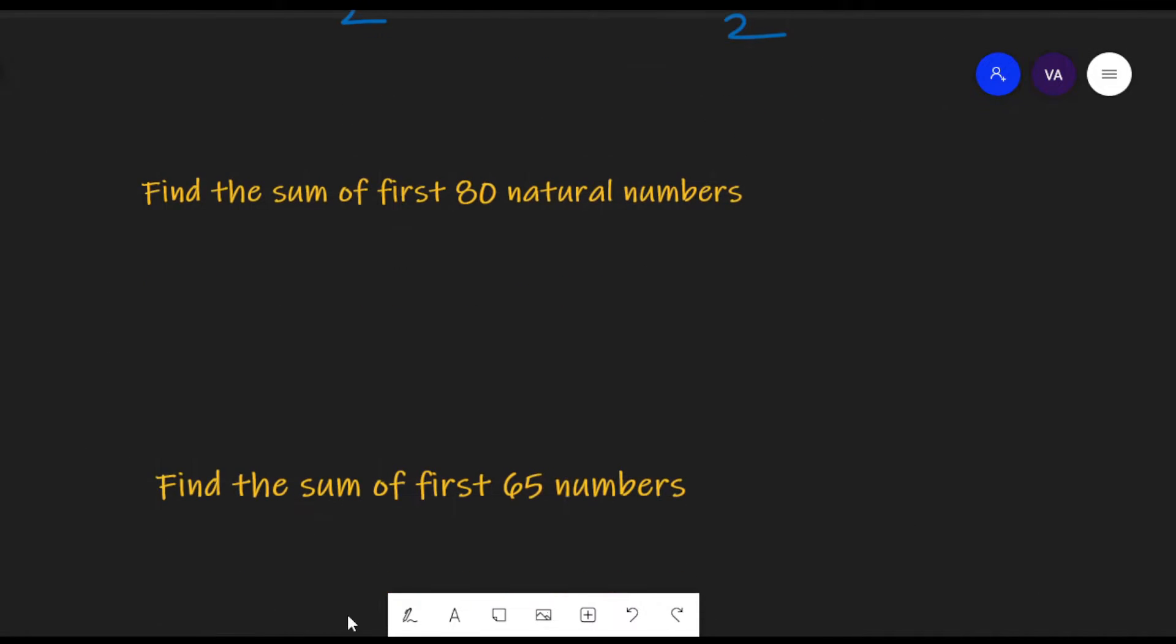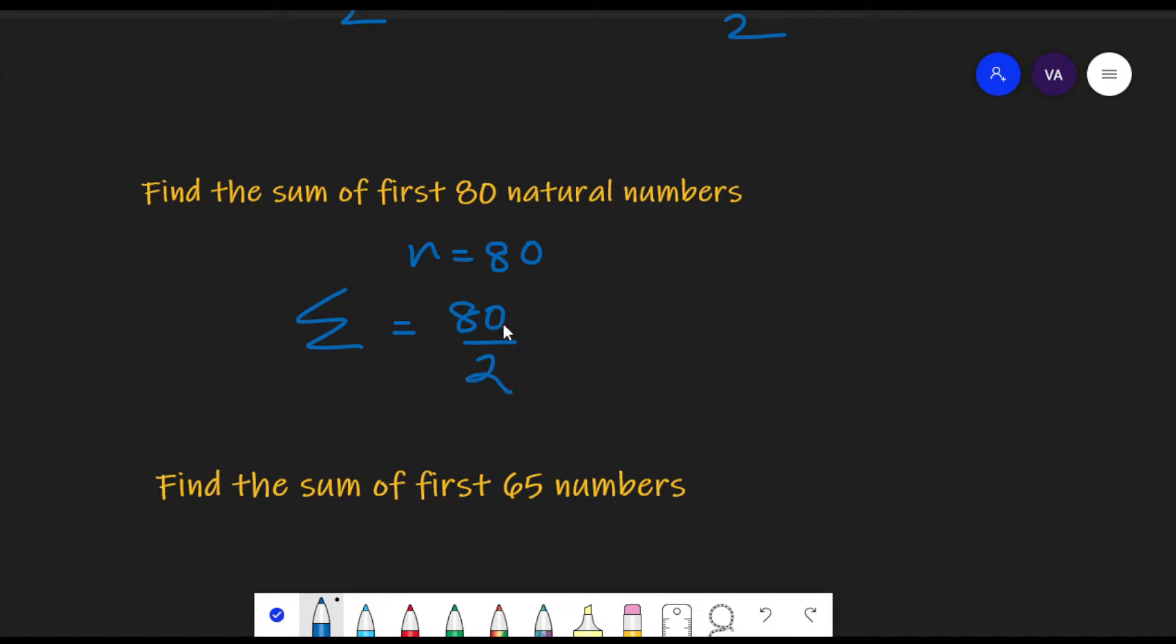Now using this formula, let us quickly find the sum of first 80 natural numbers. So here n is equal to 80. So our sum is 80 divided by 2, that is 40 pairs into 80 plus 1, which will be the sum of each pair. So we have 40 into 81, which works out to be 3240. Yes, so quickly we can find by this formula, n into n plus 1 by 2.